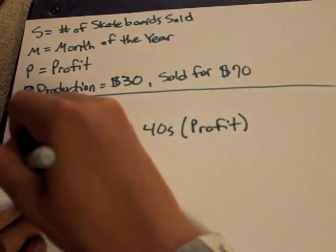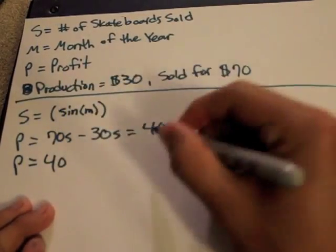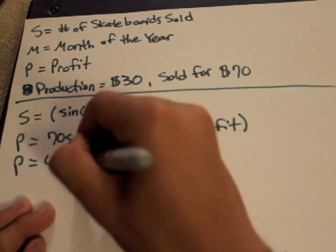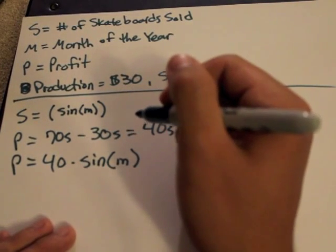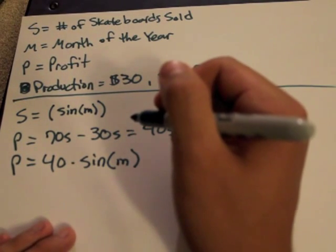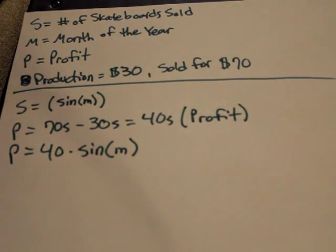Now that also means P is equal to 40 times sine M. And that is the exact equation we need to start tracking the profit when comparing the number of boards sold to what month of the year it is.